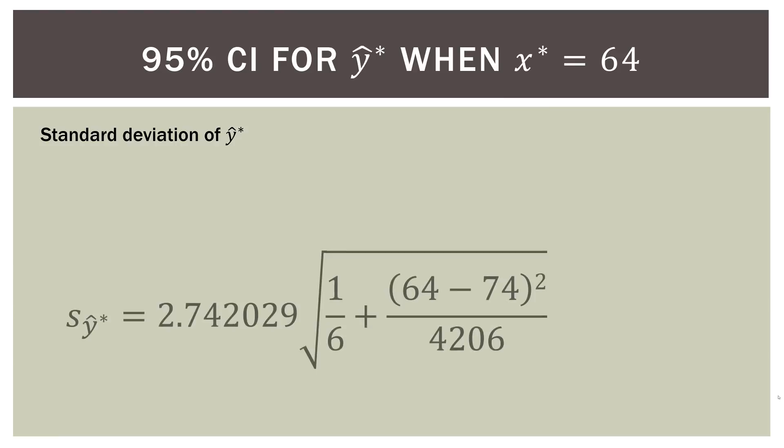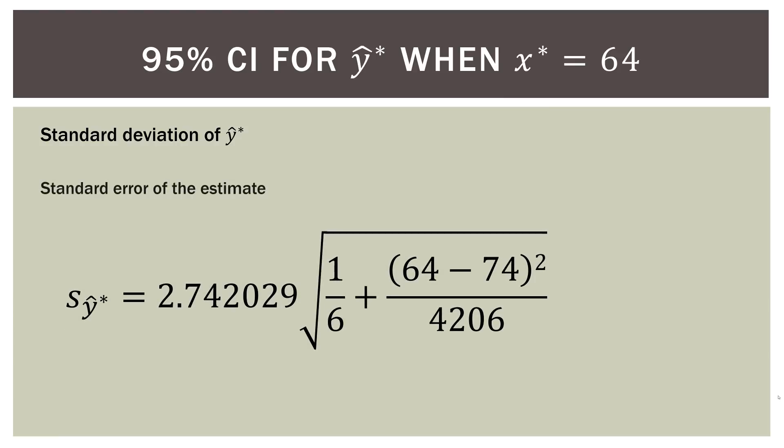All right, so let's go ahead and put some numbers in. So remember that the 2.742029 is the standard error of the estimate from the regression output that we did, and we calculated it by hand previously. So again, we're interested in $64 tip. $74 is the mean of the bill, or the meal amounts. Number of observations is six. And then this 4206 we previously calculated in another video. We've used that in other calculations. So from here, it's just good old algebra.